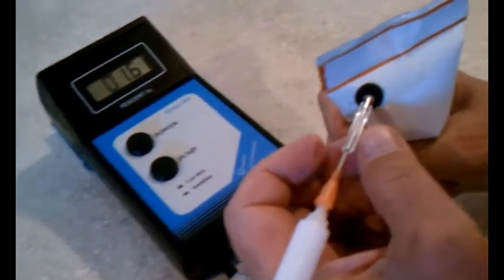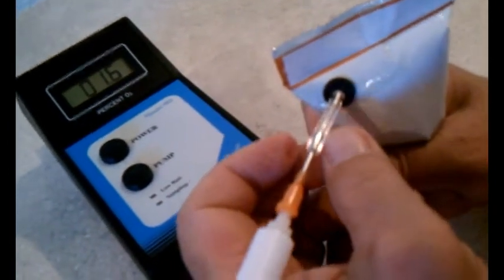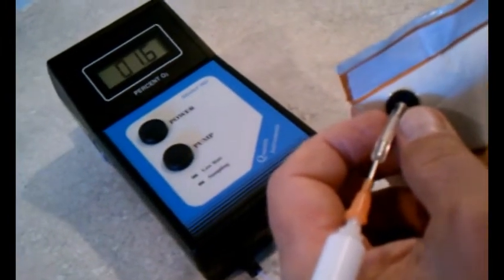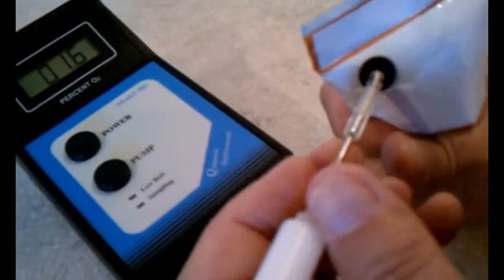Now, you can see some of the food product came out of the needle and it remains in the Tiagon piece. So, the reading has stabilized at one point six percent O2.